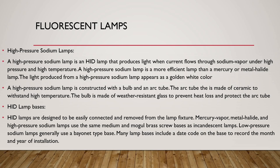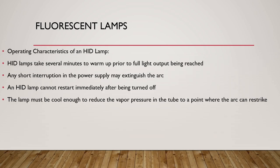HID lamp bases are designed to be easily connected and removed from the lamp fixture. Mercury vapor, metal halide, and high pressure sodium lamps use the same medium and mogul brass screw bases as incandescent lamps. Low pressure sodium lamps generally use a bayonet-type base. Many lamps include a date code on the base to record the month and year of installation.